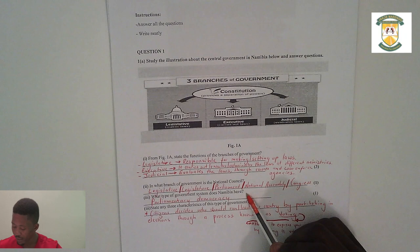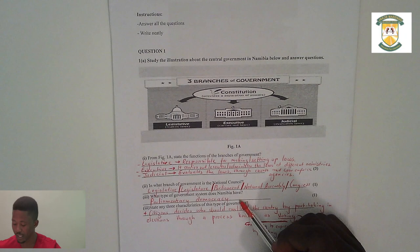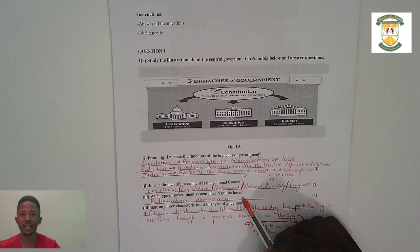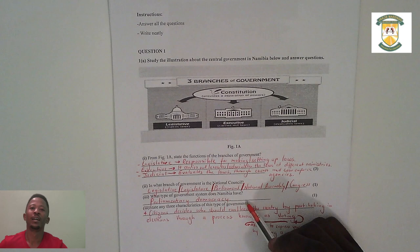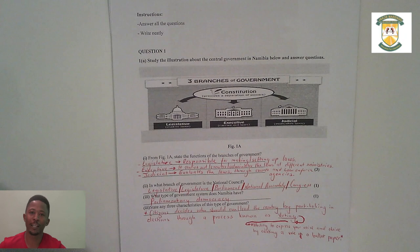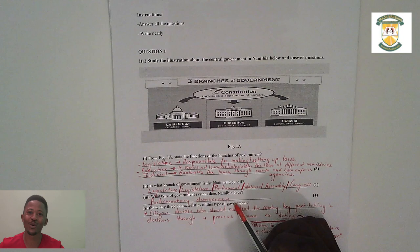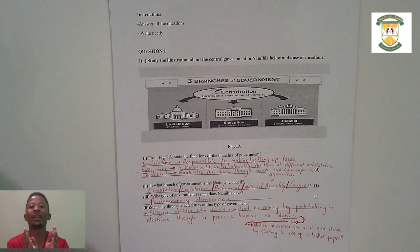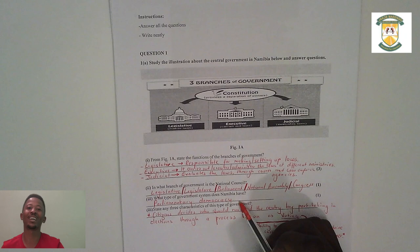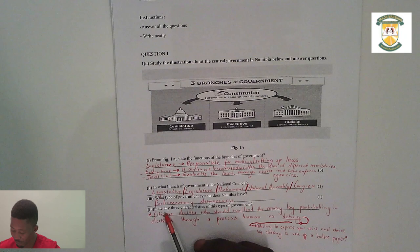The next question asks what type of government system Namibia has. The correct answer is a parliamentary democracy. When I was marking, some learners wrote 'a republic' — that is not wrong, but it is not the correct answer here. The republic system is used in South Africa, whereas Namibia uses a parliamentary democracy.